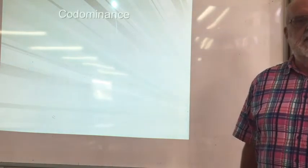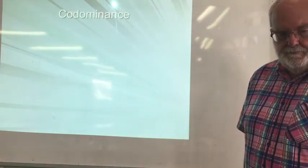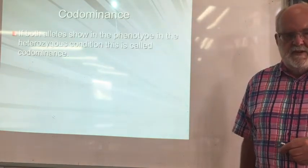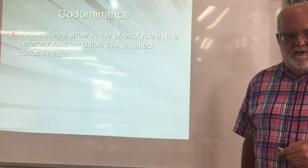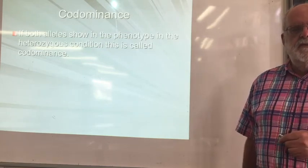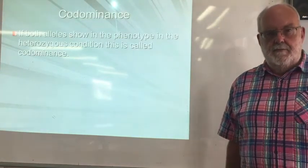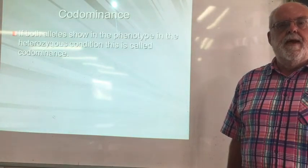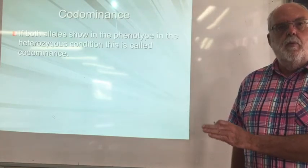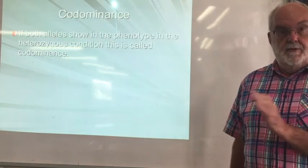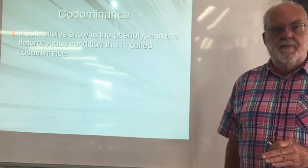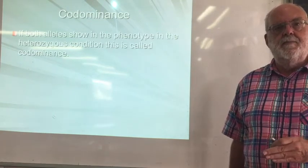Looking at codominance — what does it mean? If both alleles show in the phenotype in the heterozygous condition, this is called codominance. So for example, a red flower parent reproducing with a white flower parent gives resultant offspring that are pink. You've got both alleles being expressed.